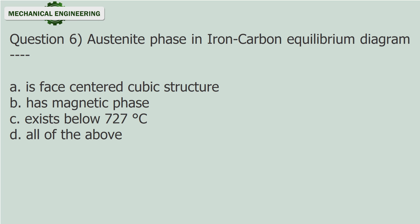Question 6: Austenite phase in the iron-carbon equilibrium diagram — (fill in the blank). A. Is face-centered cubic structure. B. Has magnetic phase. C. Exists below 727 degrees Celsius. D. All of the above.